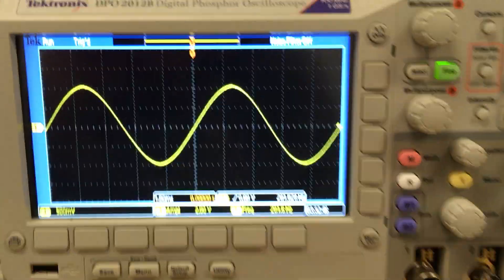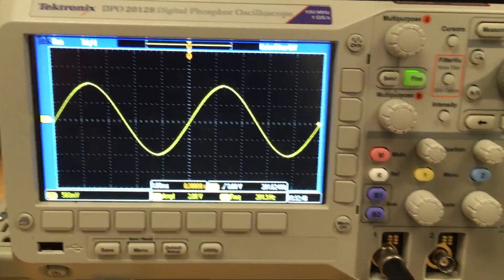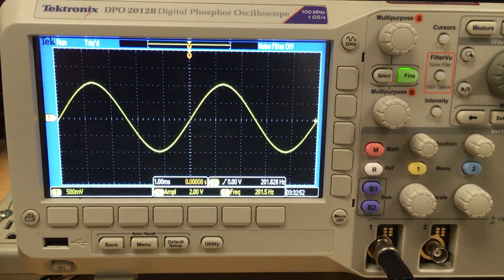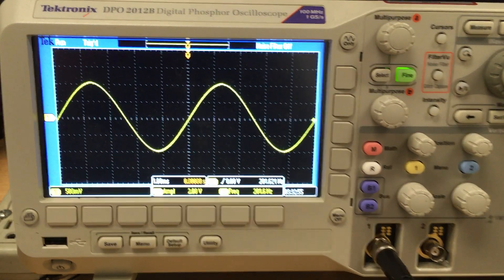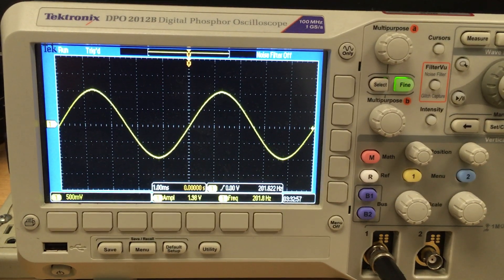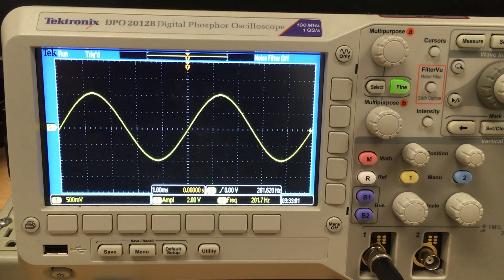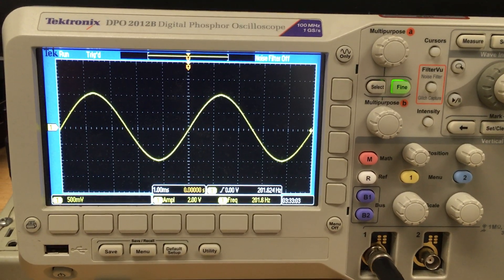So those are some of the basics, just adjusting the vertical and horizontal axes of our display, so that we can adequately display whatever our signal is. There's lots of subtleties to the oscilloscope. Next time, we'll come back and measure an actual circuit, and I'll see you then.